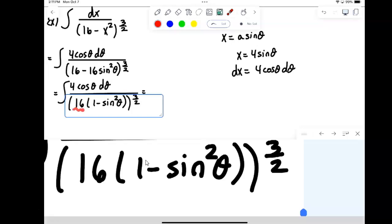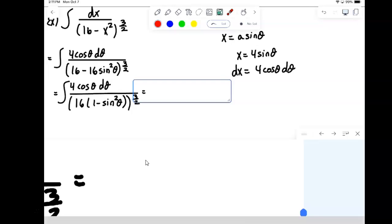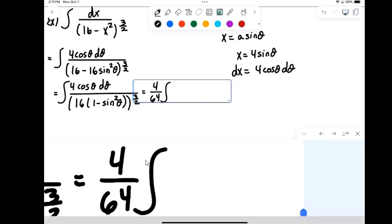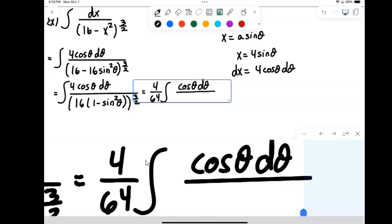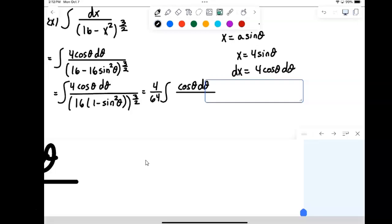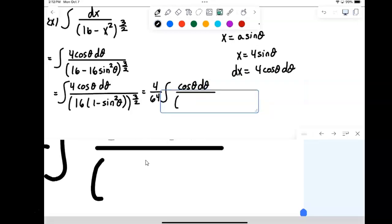So in this case with the 16, 16 square rooted is 4. 4 to the 3rd would be 64. So what I'm going to have here is 4 over 64 integral of cosine theta d theta on top.